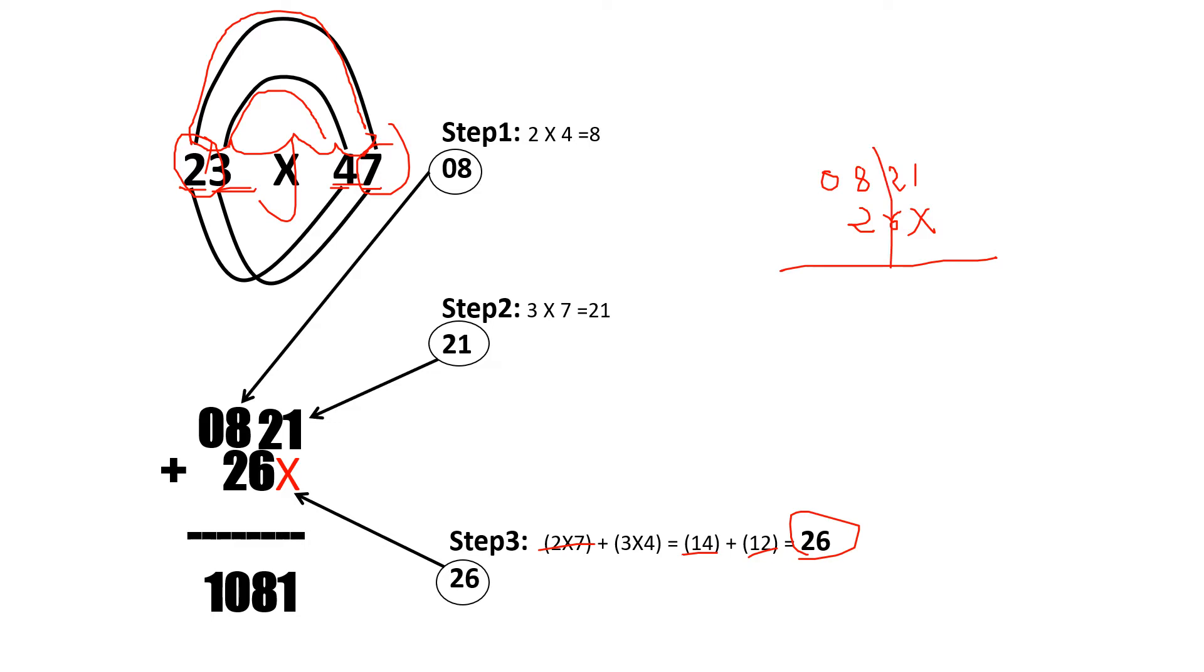So this is 8 plus 2, 10. 6 plus 2, 8 and 1. So that way, I have got 1, 0, 8, 1. 1, 0, 8, 1.